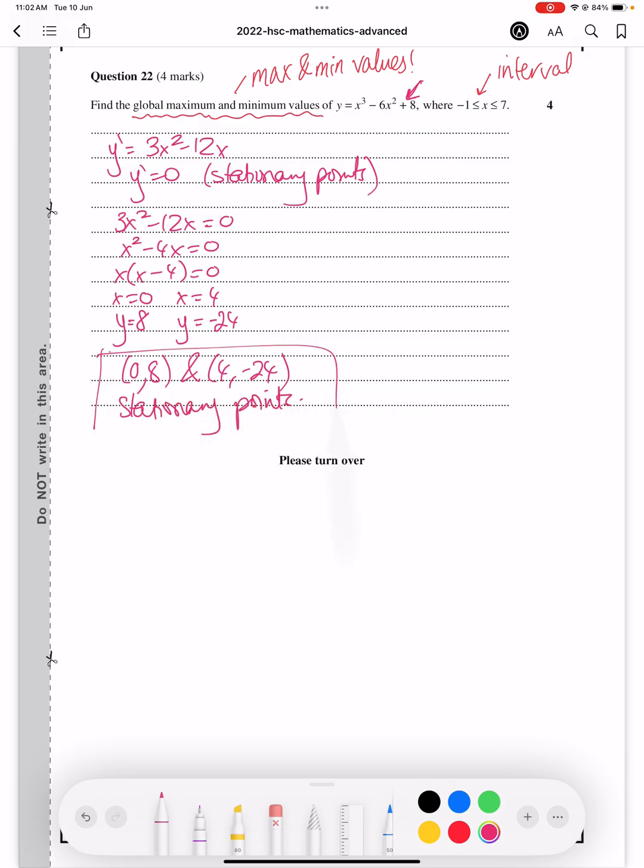So now you want to determine their nature by finding y double dash, and y double dash is simply the derivative of the y dash equation. So that would be 6x minus 12.